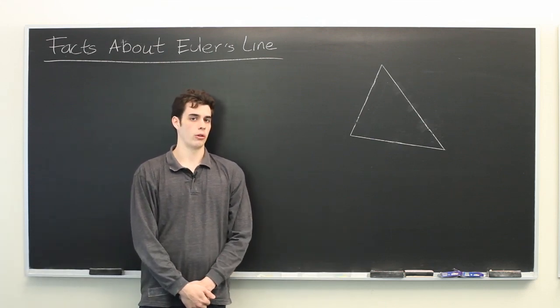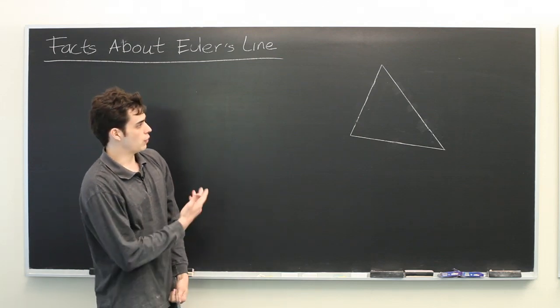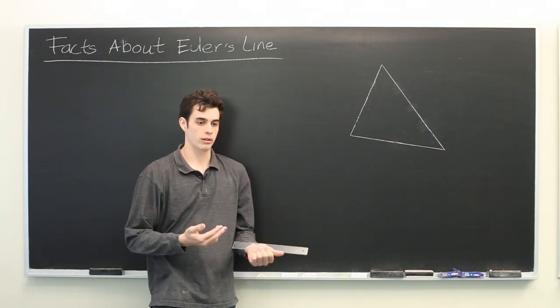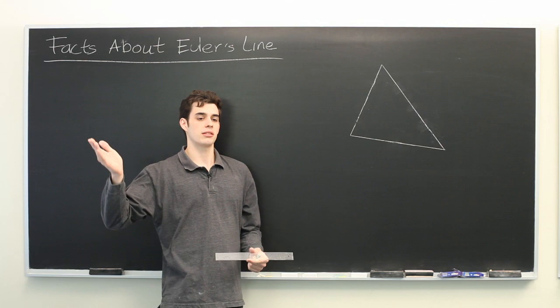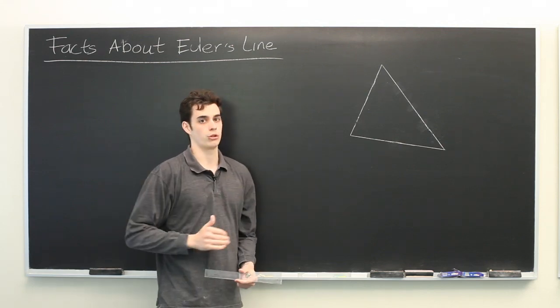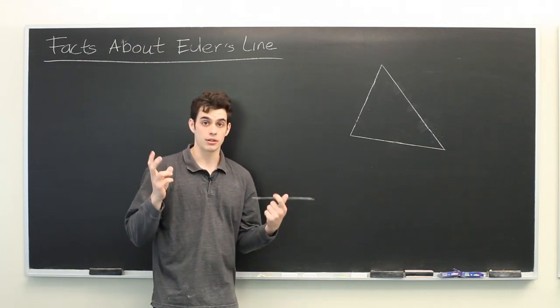So, what is Euler's line? If you're given a triangle, Euler's line is a line that connects several different points on the interior of the triangle, each of which can be considered the center.